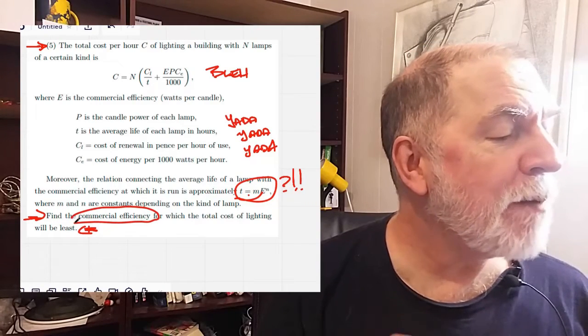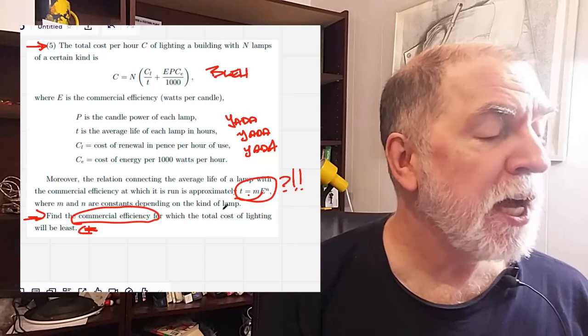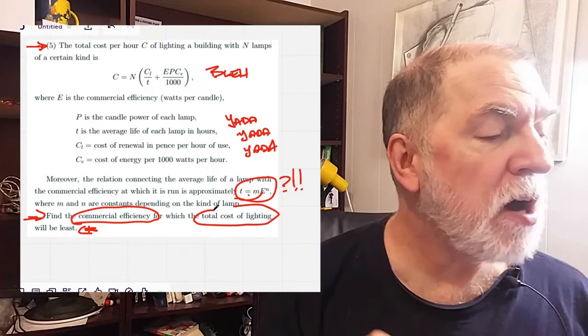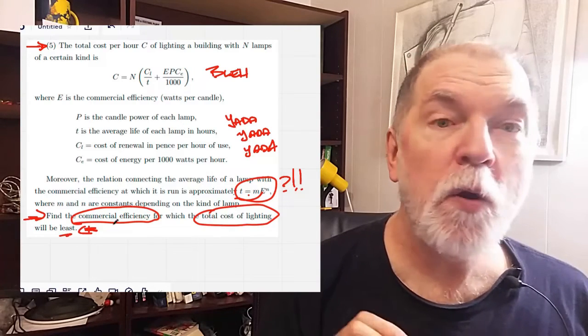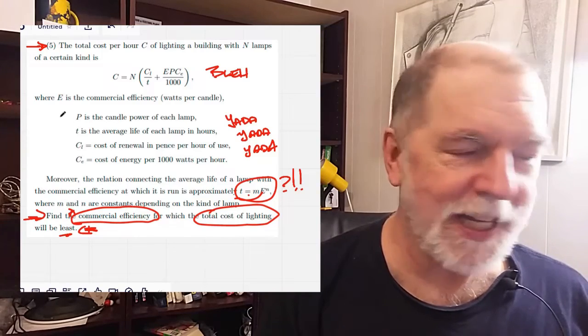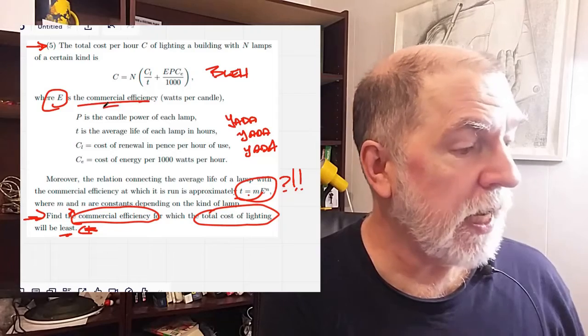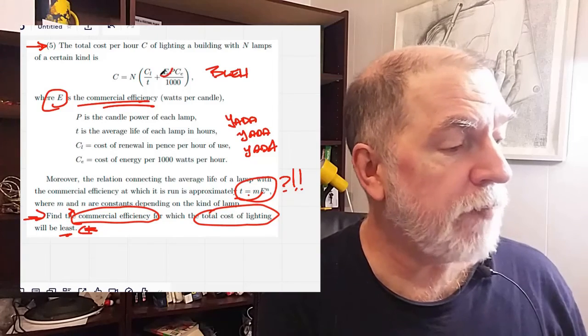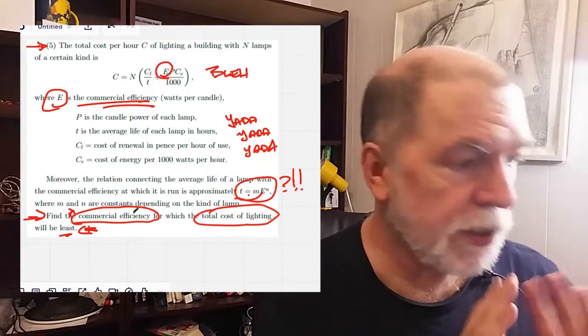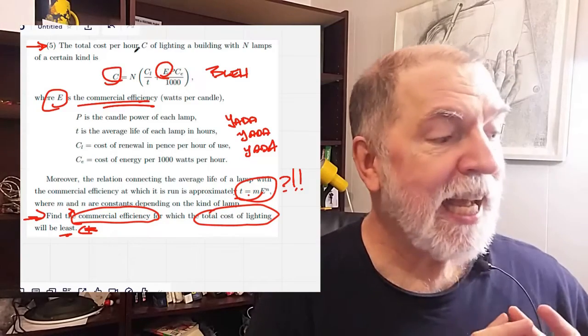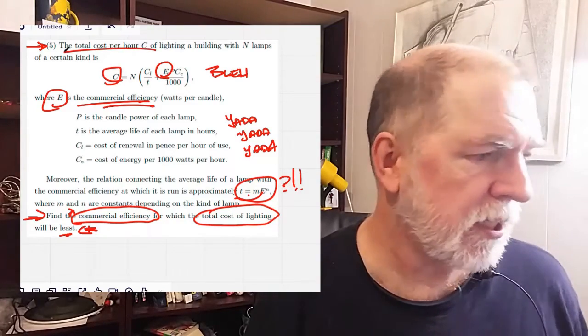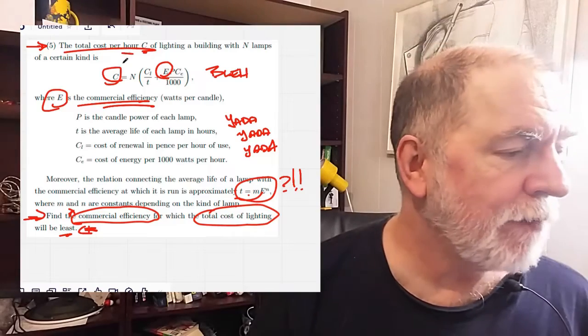Find the commercial efficiency for which the total cost of lighting will be least. Commercial efficiency, that was over here. E is the commercial efficiency. So let's circle that. And C is the total cost per hour of lighting.